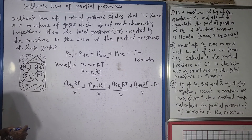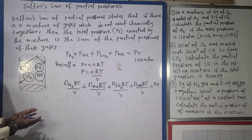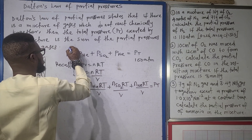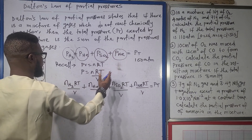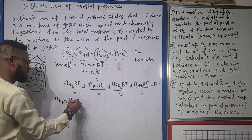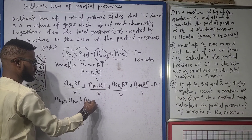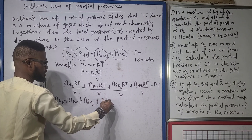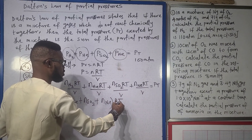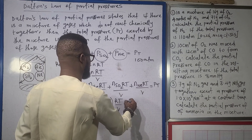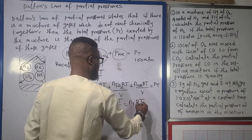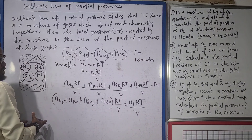Here, R is the universal gas constant, T is the temperature of the system, and V is the volume of the containing vessel. Since RT/V is common to all individual gases, we can factorize: (n₁ + n₂ + n₃ + n₄) × RT/V equals the total pressure. And the total pressure equals nT × RT/V.